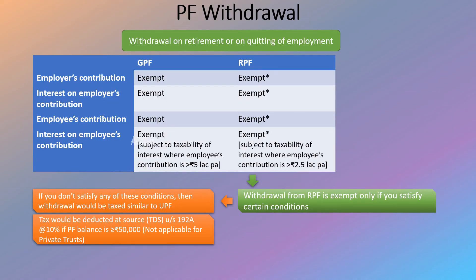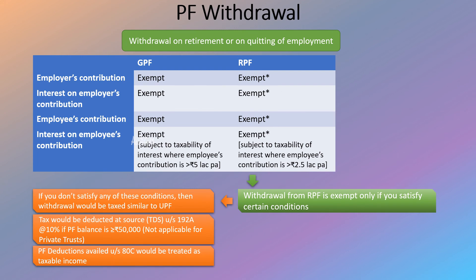Further, tax would be deducted at source at 10% if the PF balance is 50,000 or more. But this TDS provision applies only if your PF account is with EPFO, i.e. Employees Provident Fund Organization. If it is with a private trust, TDS provisions would not apply. Also, PF deductions availed under Section 80C would be treated as taxable income upon withdrawal.